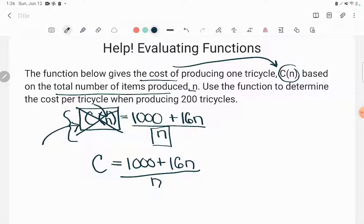Now it looks more like something we're used to when we go to evaluate equations. And now it's easier to plug my numbers in because take a look. It says use the function to determine the cost per tricycle. We're determining C. They're asking us, what is C?